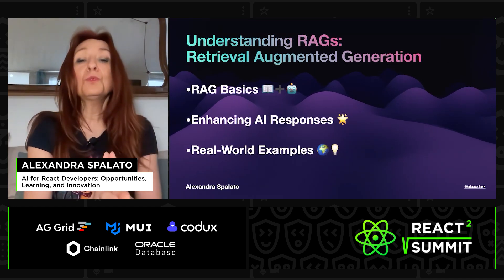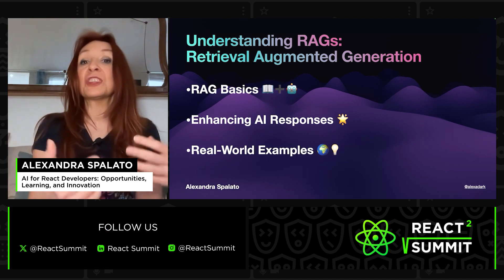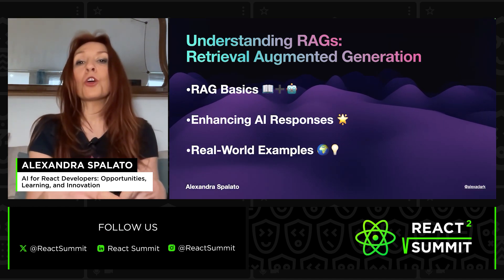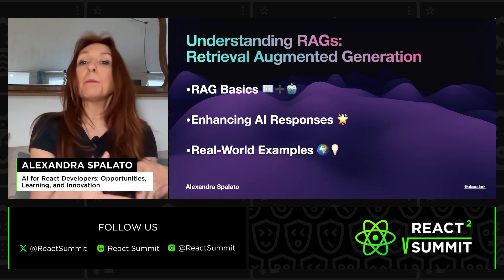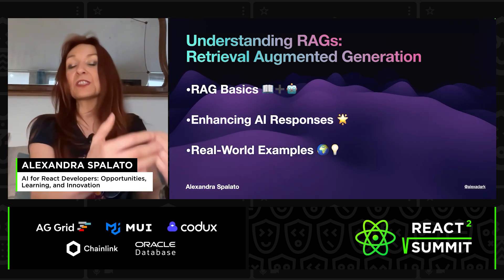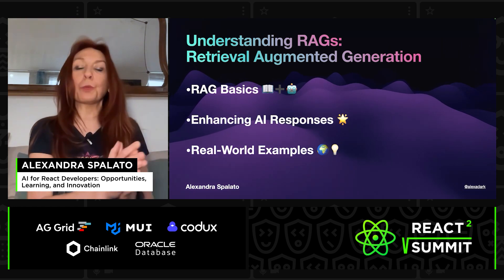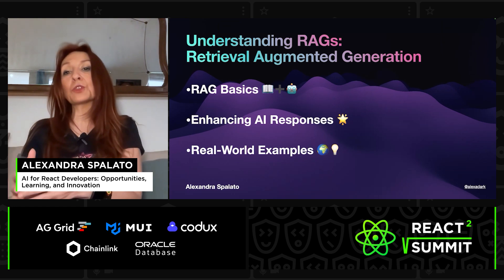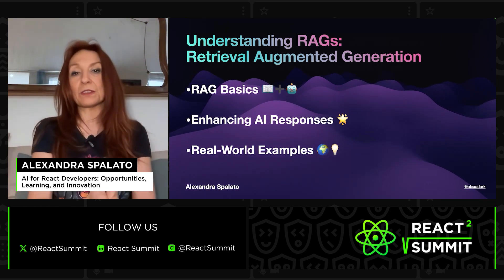Then you need to understand RAGs — Retrieval Augmented Generation. With RAGs, we can augment the model with additional data. For example, if you are building a customer service chat, you will first need to feed the model information with data about the company. This will allow the model to use this external information by retrieving it, and from there it will generate the answer.